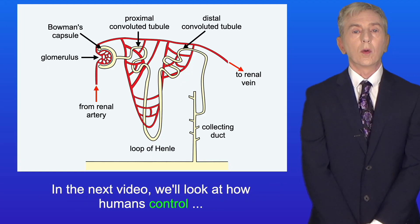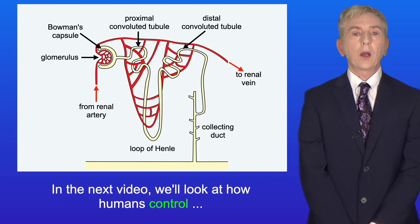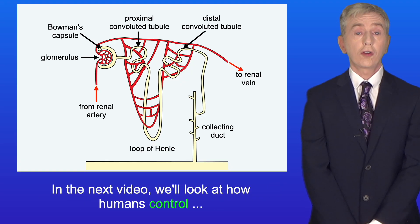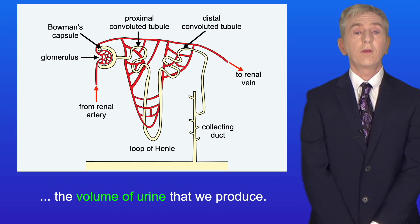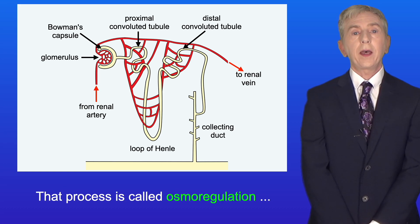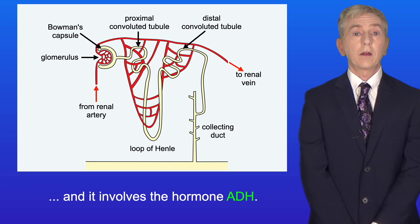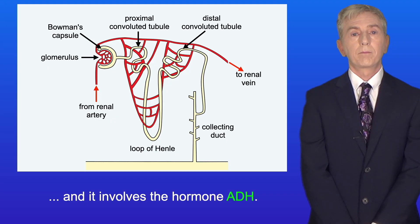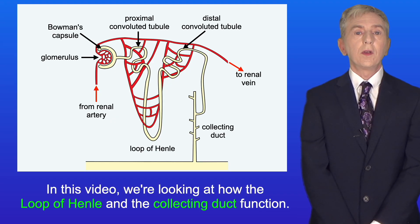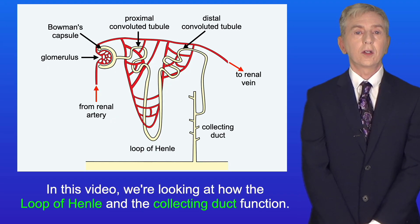Now in the next video, we look at how humans control the volume of urine that we produce. That process is called osmoregulation, and it involves the hormone ADH. But in this video, we're looking at how the loop of Henle and the collecting duct function.